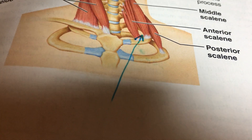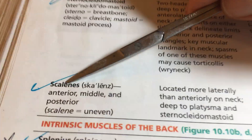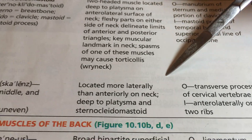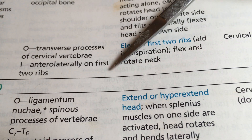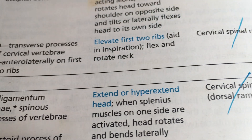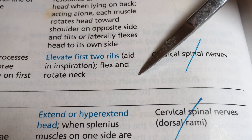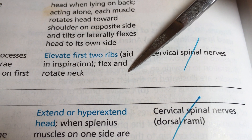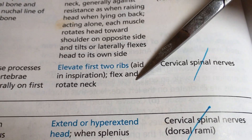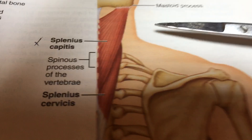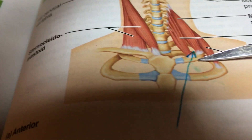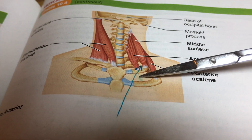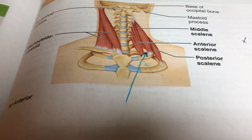In the book, the scalenes — anterior, middle, and posterior — are located laterally. Origin is the cervical vertebrae, insertion is the first two ribs. They play a role in forced inspiration, but you can also reverse the origin and insertion to flex and rotate the neck. So it works both ways — you could rotate the neck, or stabilize it and breathe deeply, throwing the head back for forced inspiration.